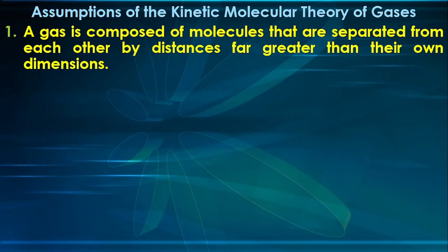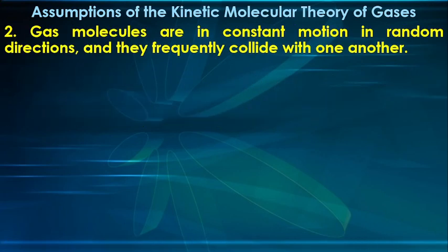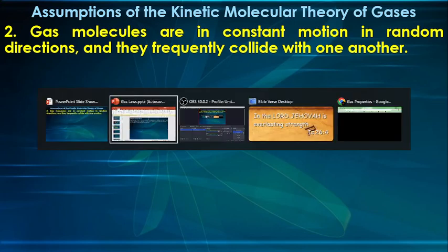The first assumption of the kinetic molecular theory is that a gas is composed of molecules separated from each other by distances far greater than their own dimensions. The molecules can be considered as points — they possess mass but have negligible volume. The second assumption is that gas molecules are in constant motion, as shown in the simulation.